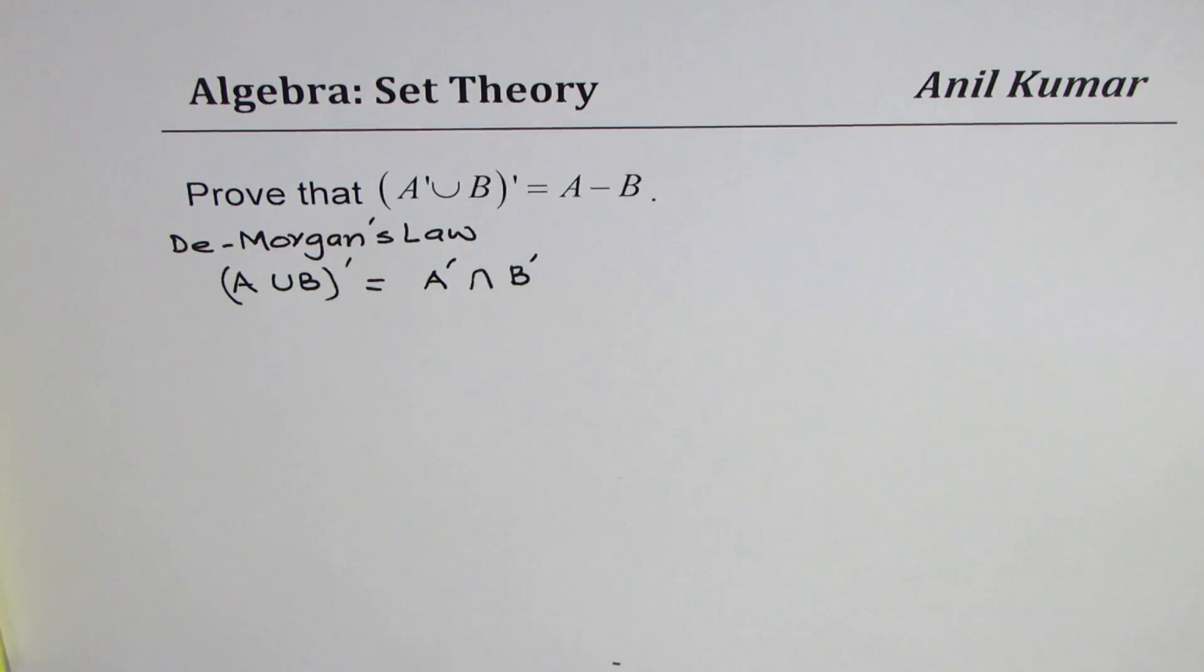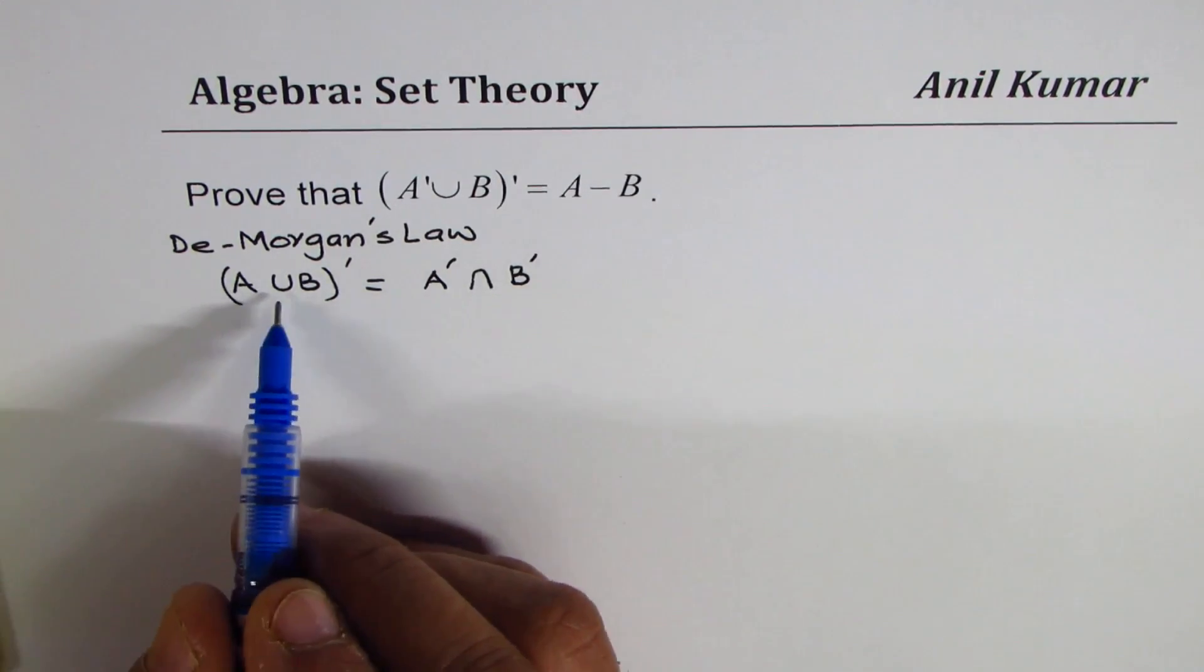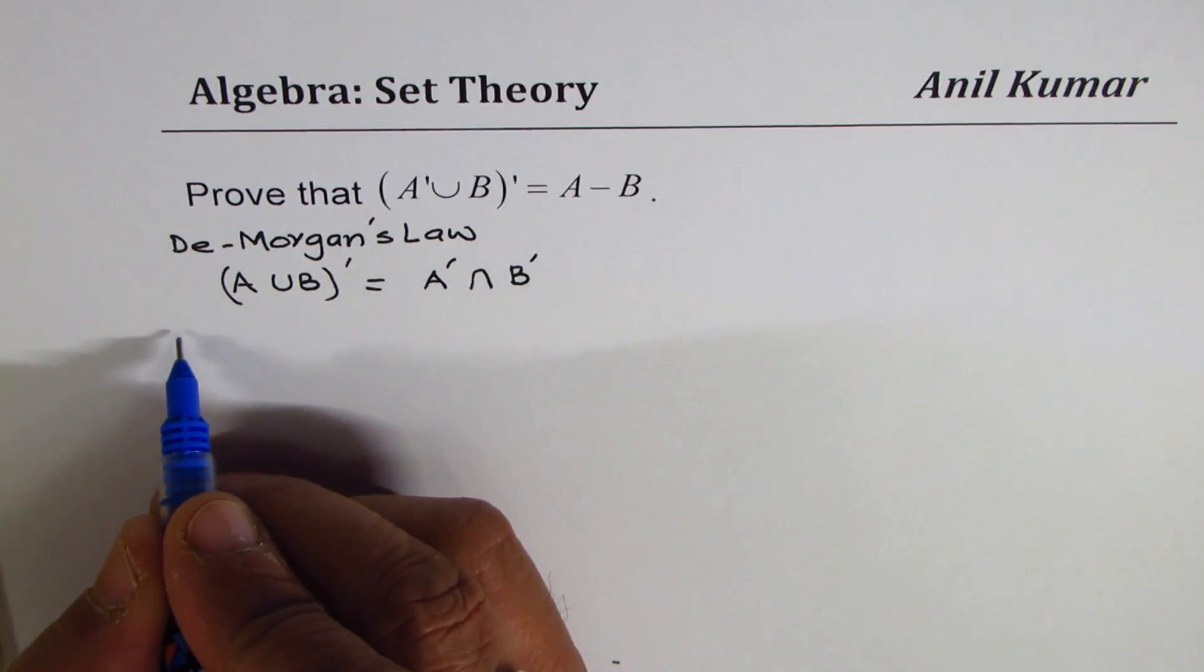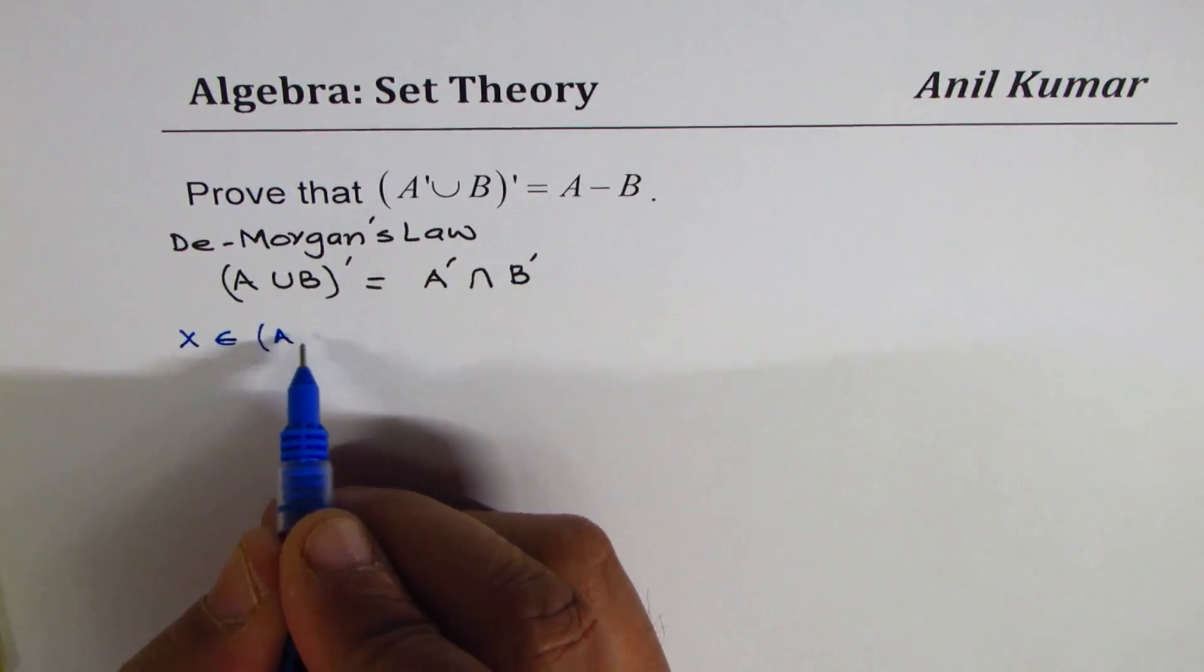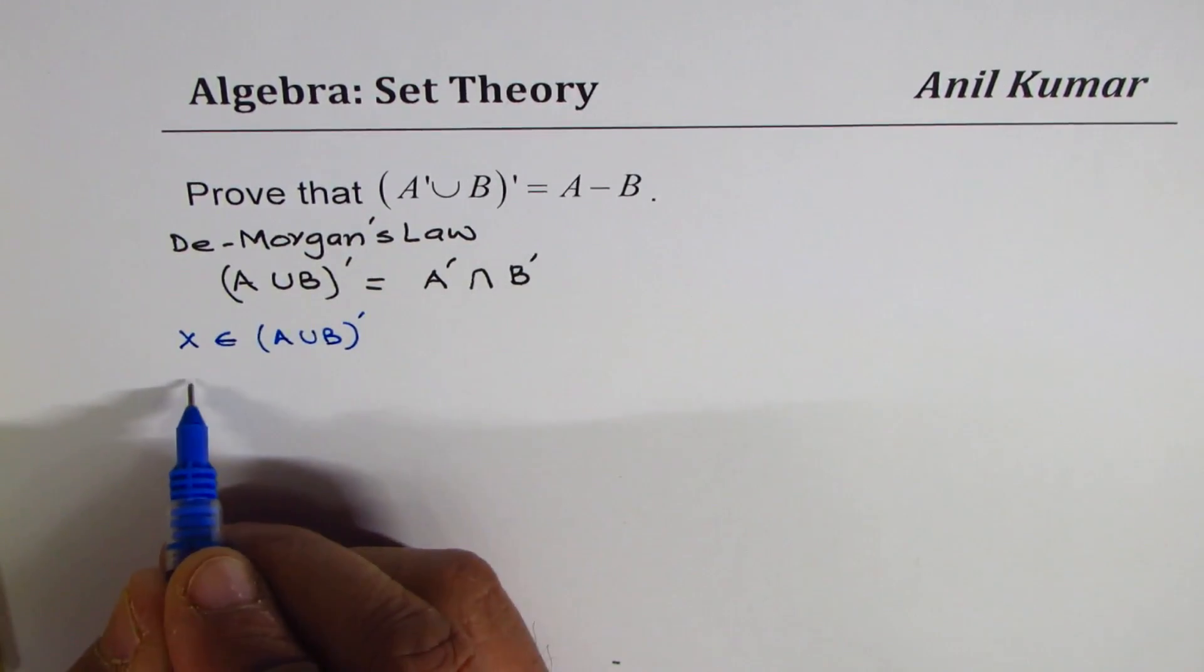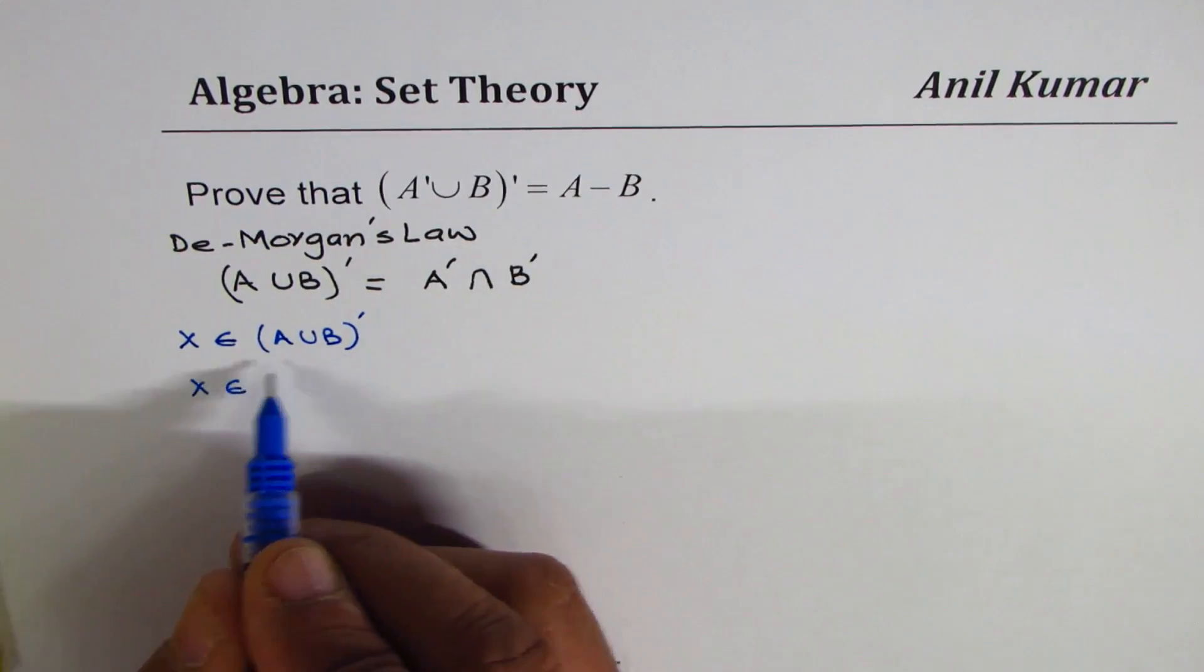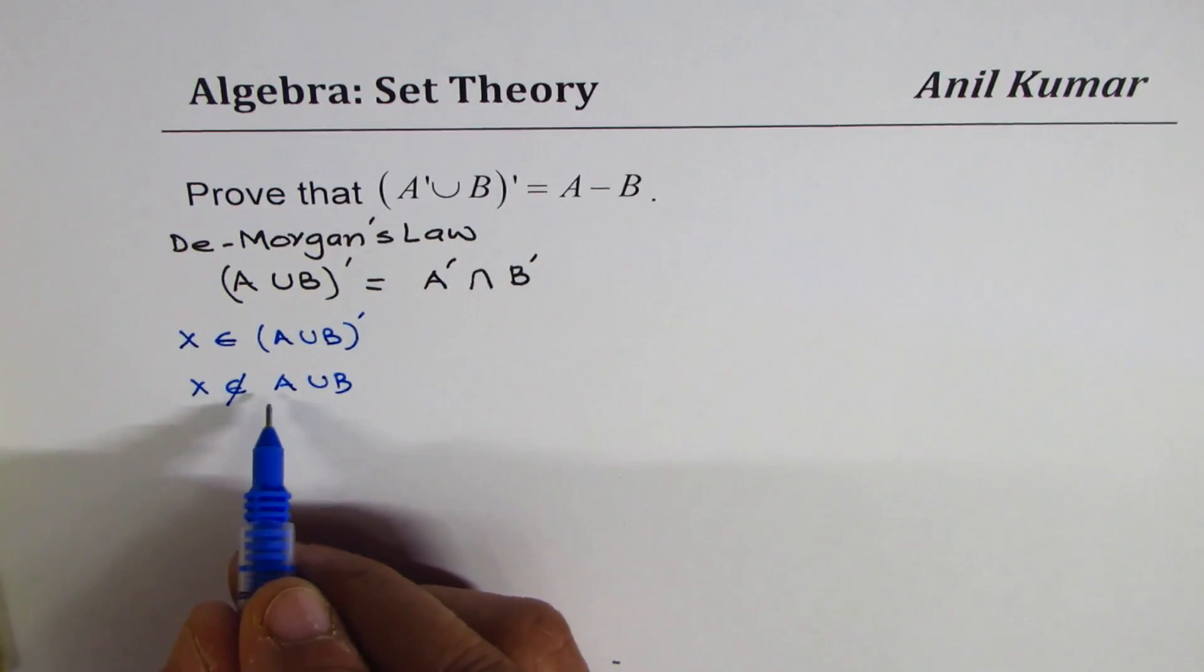So what does that really mean? Let's start from the left side. When we say A union B and its complement, we are saying any element x belongs to A union B complement. So that means that x does not belong to A union B.